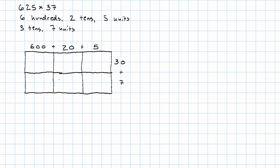6 hundreds times 3 tens is 18 hundred tens, so 18 thousands. 2 tens times 3 tens is 6 ten tens, so 6 hundred. 5 units times 3 tens is 15 tens. 6 hundreds times 7 units is 42 hundreds. 2 tens times 7 units is 14 tens. 5 units times 7 units is 35 units.